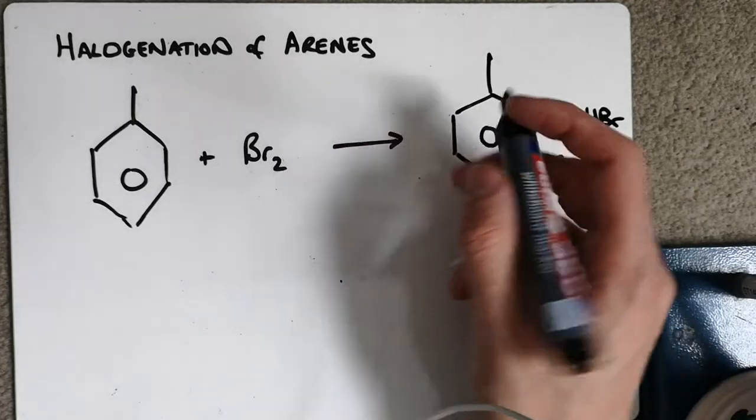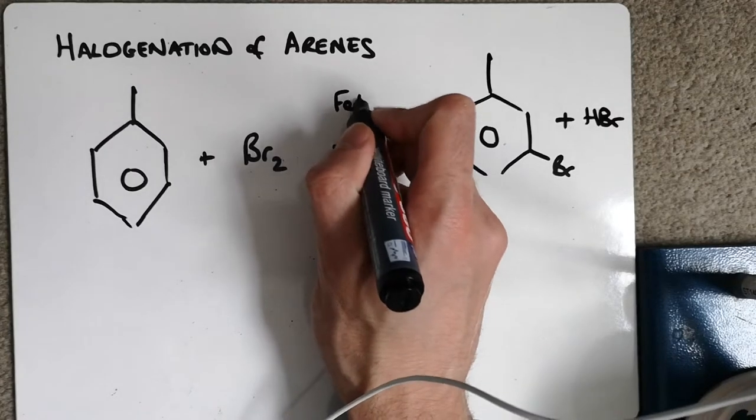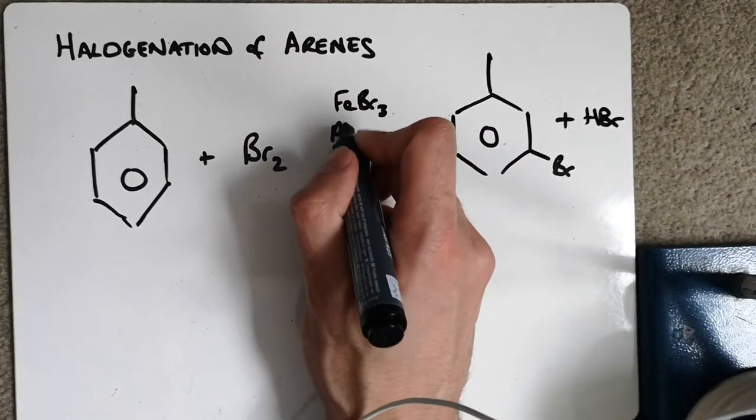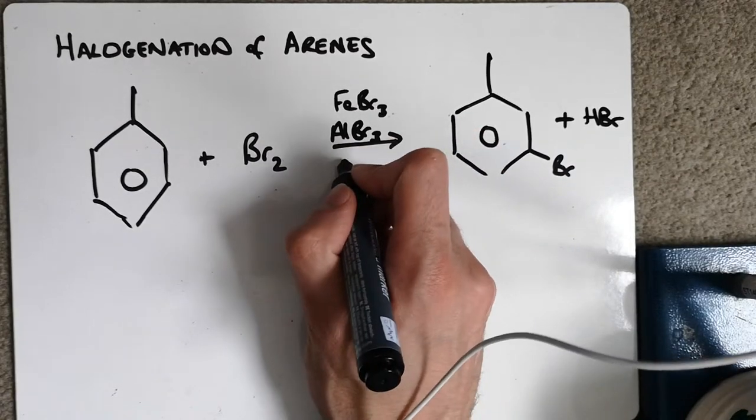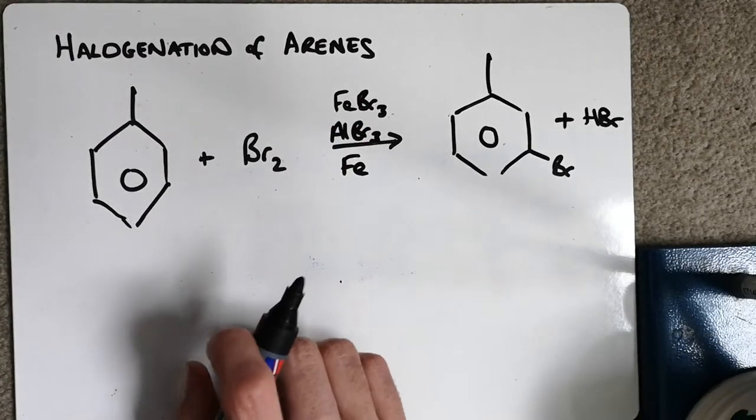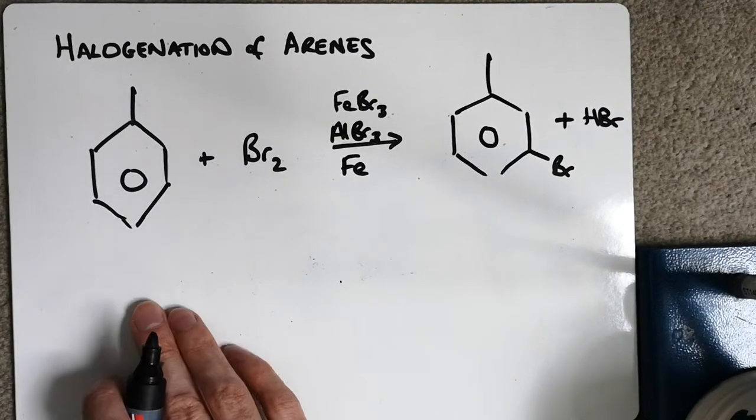And the catalyst we use to make this happen, we can use a few actually. We could use FeBr3, AlBr3, or we could use just iron by itself. So any one of those three catalysts will make this reaction occur, or help this reaction occur.